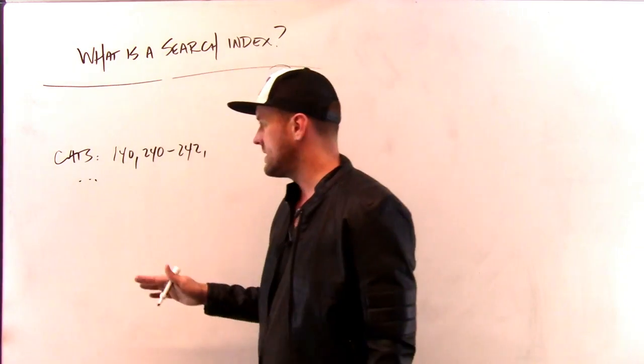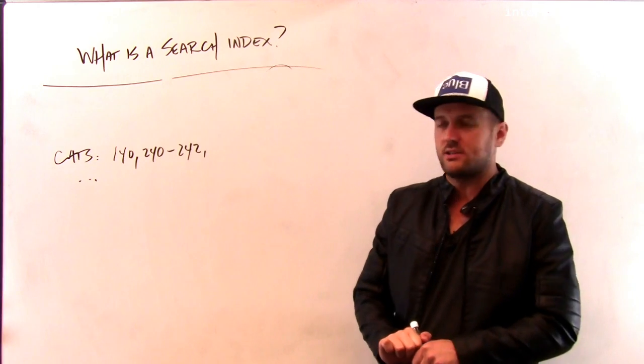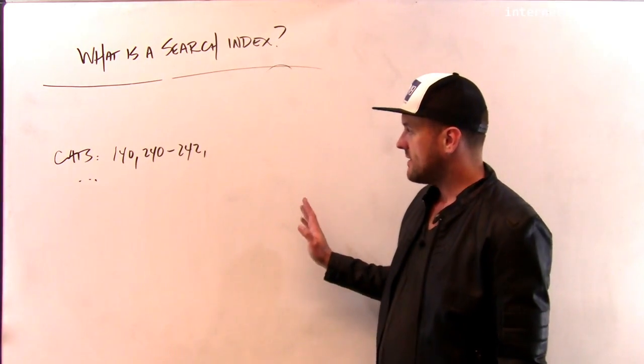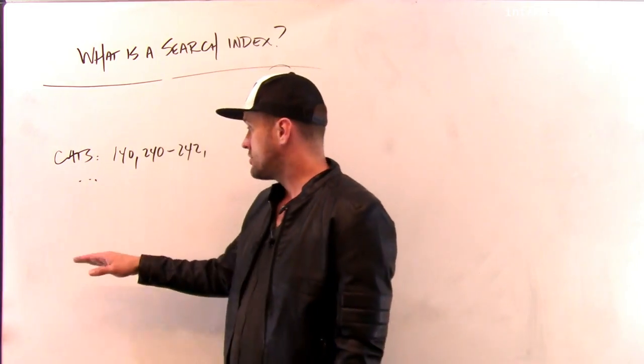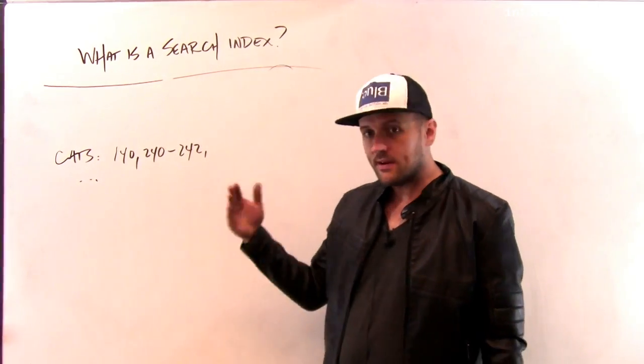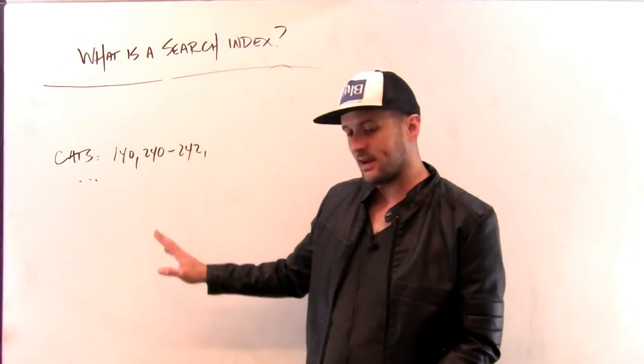Some of them might be bolded to indicate that that's a particularly important discussion of cats in this particular book. But what it's doing is it's mapping some term that you might be looking for to parts of the book where you can find information about that particular thing. So this is a book index.